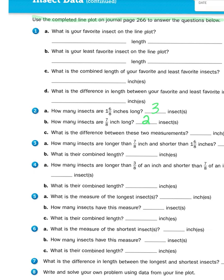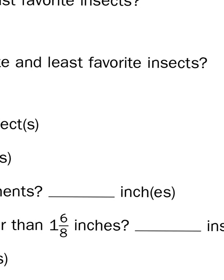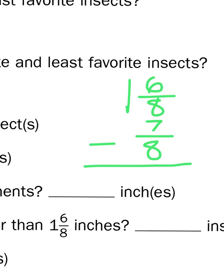Now 2C is a little bit different. It asks us what's the difference between these two measurements. Difference is just a code word for subtract. So what I need to do is set up a subtraction problem: subtracting one and six eighths minus seven eighths. So I'm going to set this problem vertically: one and six eighths minus seven eighths.